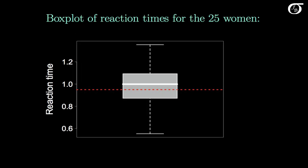Before carrying out any statistical inference procedures, we should plot our data and have a look. Here's a box plot of the reaction times for the 25 women, with a red line representing the hypothesized value of mu at 0.95 seconds. The observed sample mean x-bar was 1.00, and we're going to carry out a test to see if this difference between what was observed and the hypothesized value is a significant difference. Visually it doesn't seem like much of a difference, but let's see what the test says.